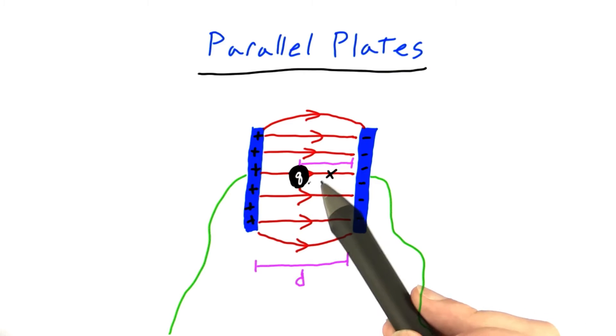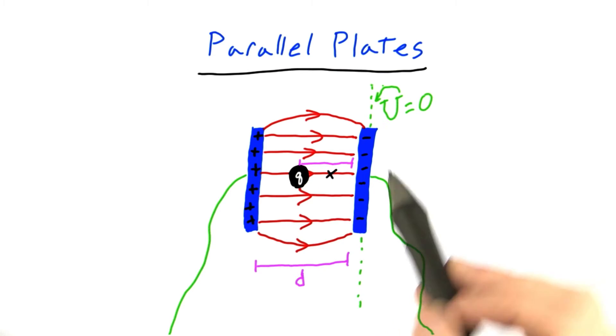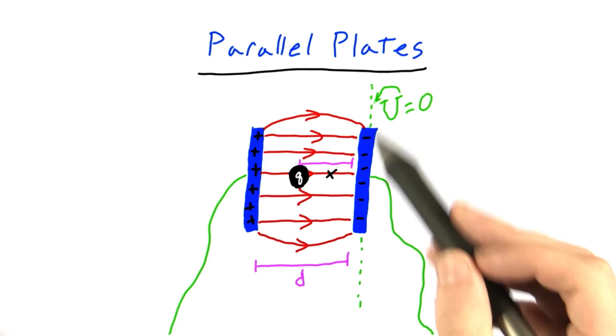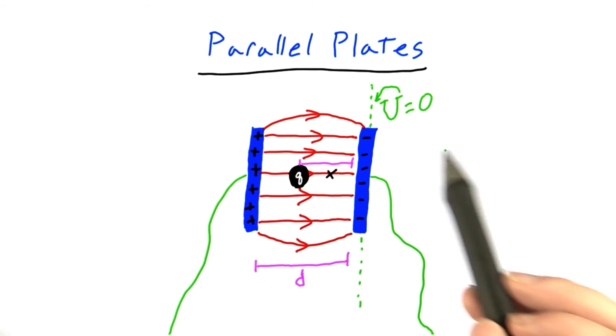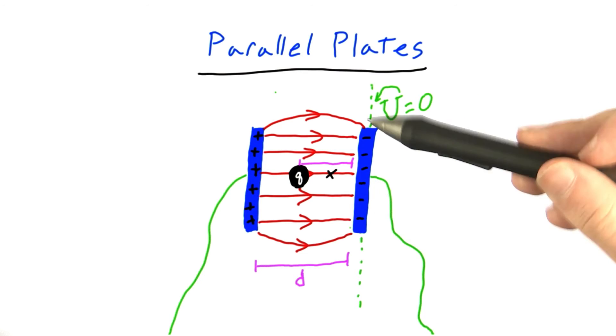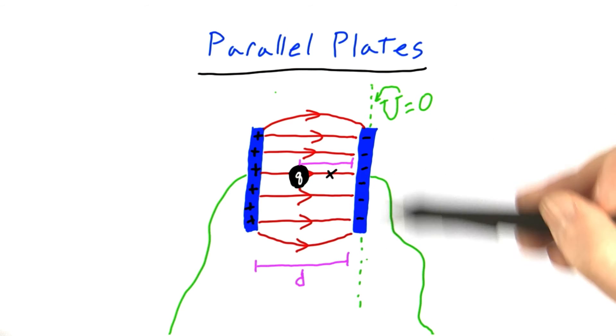Now we want to find out what the potential energy is for this charged particle in the middle of the field. Just so we're all on the same page, I'm going to define potential energy to be zero right here at the negative plate. You'll remember that we can actually define potential energy to be zero wherever we want, so I could have done it over here or even over here. But just for convenience, I'm going to choose this point to be my potential energy equals zero point.